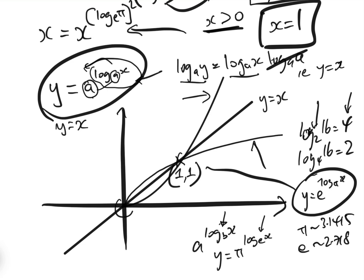You can see they don't actually meet at x equals 0, because we've established there is no value there. They only meet once, at x equals 1. And although y equals x splits them, it is not a reflection in y equals x.